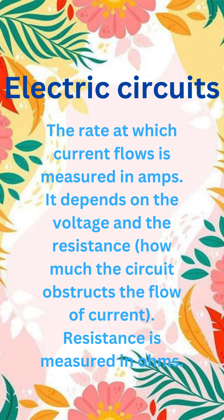The rate at which current flows is measured in amps. It depends on the voltage and the resistance — how much the circuit obstructs the flow of current. Resistance is measured in ohms.